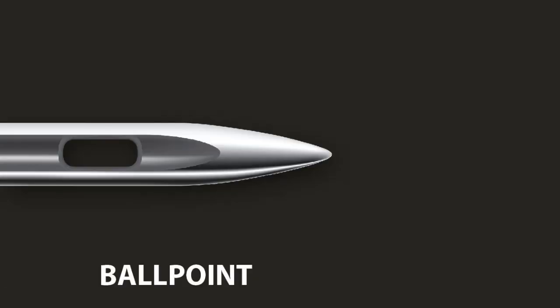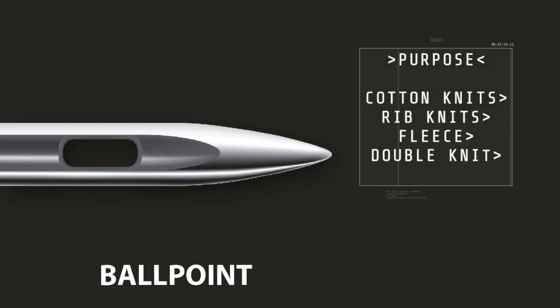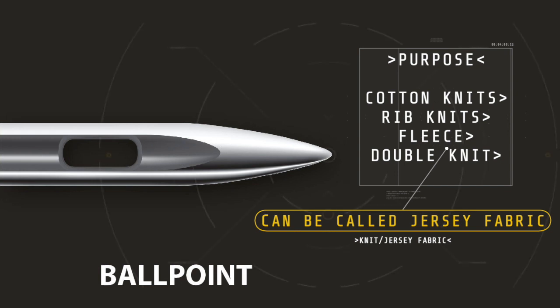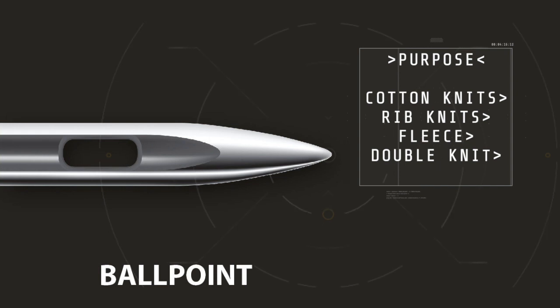The ballpoint needle is ideal for cotton knits, interlock, rib knits, fleece, double knits, suede and most knit fabrics or jersey. The tip is more rounded than the universal needle and is designed to push fabric fibers apart rather than cutting them, preventing the knit fabric from laddering or running after stitching.